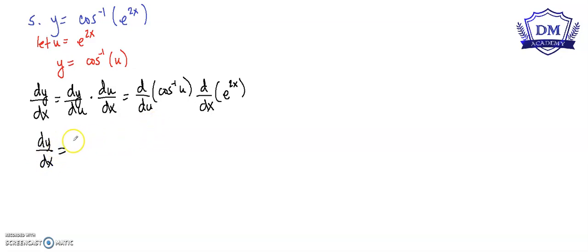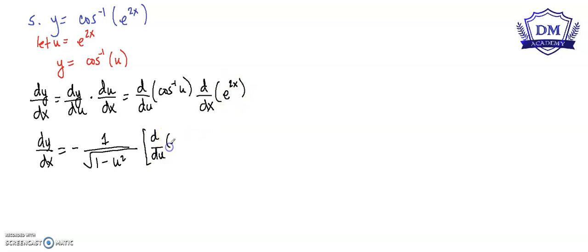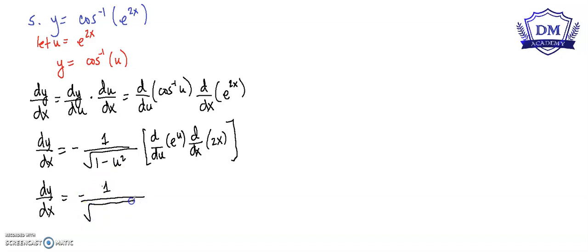So dy/dx is equal to the derivative of arccos(u), which is negative 1 over the square root of (1 - u²), multiplied by the derivative of e^(2x). Using the chain rule: d/du of e^u times d/dx of 2x, giving us e^u times 2.